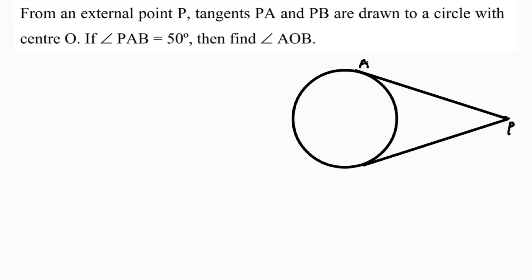PA and PB are the tangents to the circle with center O. The angle PAB is 50 degrees. We need to find angle AOB.